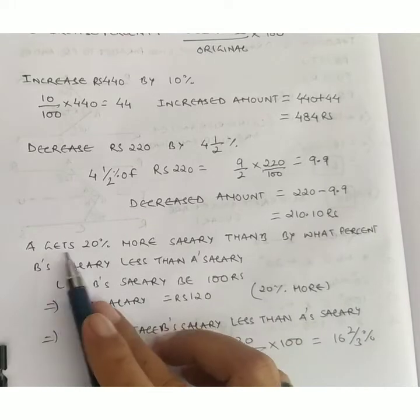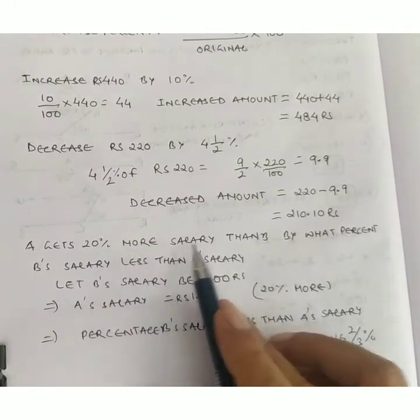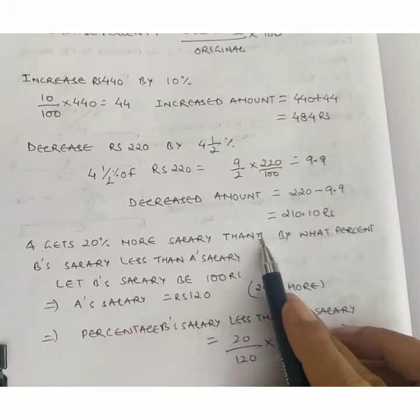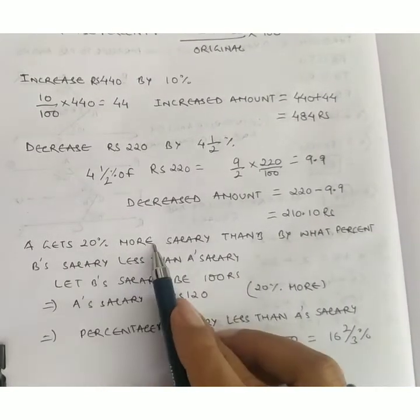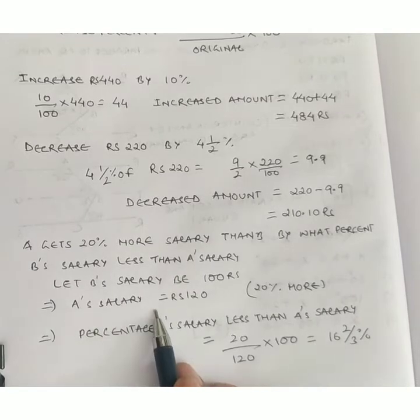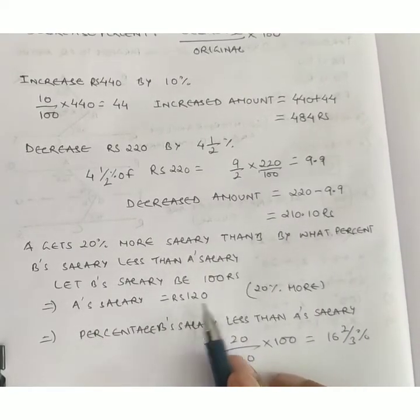Let B's salary be 100. Since A gets 20% more, A's salary equals 100 plus 20, which equals 120.